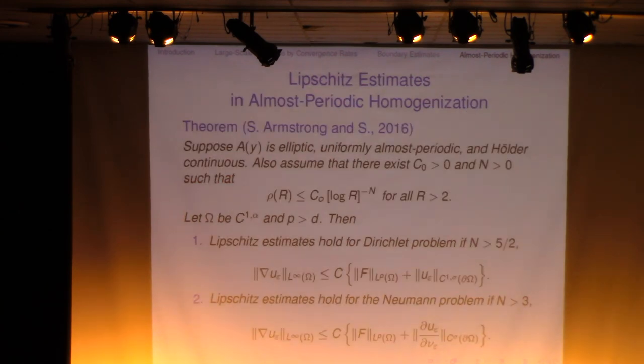So this function is used in the proof, in the theorem regarding the Lipschitz estimates in almost periodic settings. So this is a theorem due to Scott Armstrong and myself. And so under the condition that the rho of r decays faster than some negative power of log r, we have Lipschitz estimates for the Dirichlet problem, and also Lipschitz estimates for Neumann problem. The condition on A is not going to be optimal, but it's an interesting open problem to see if you need any condition at all in an almost periodic case.